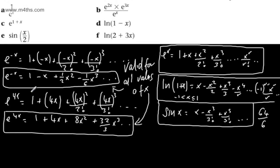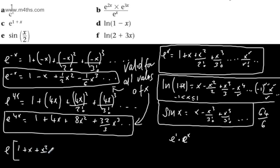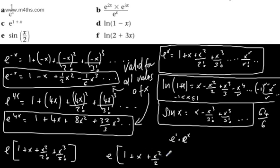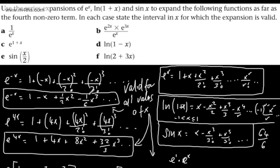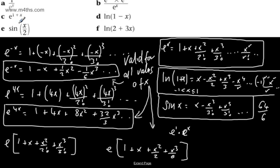Now let's look at e to the power of 1 plus x. We can look at this slightly differently. Essentially, we've just got a constant: all this is saying is e to the first power multiplied by e to the x. So we can just run a constant of e through the expansion, giving e times 1 plus x plus x squared over 2 factorial plus x cubed over 3 factorial, or more explicitly, e times 1 plus x plus x squared over 2 plus x cubed over 6. And this is valid for all x.